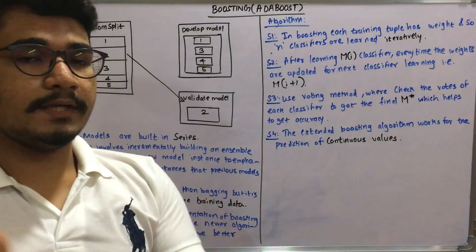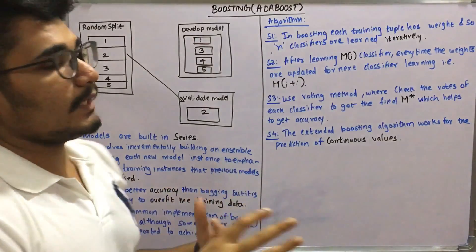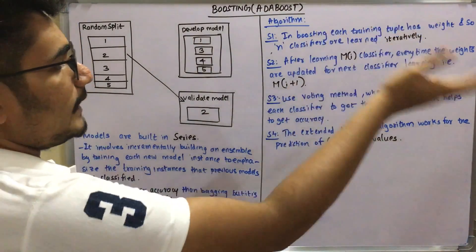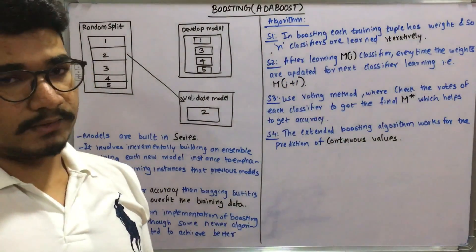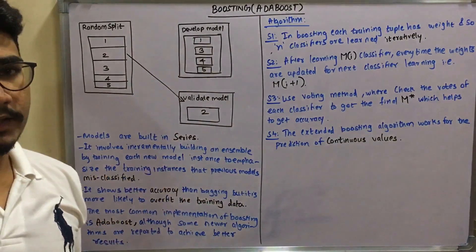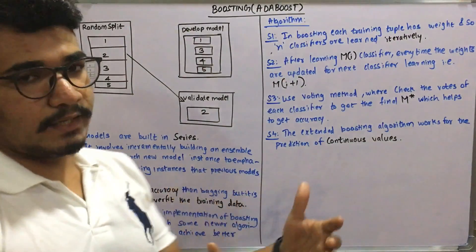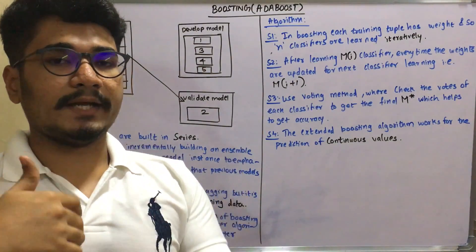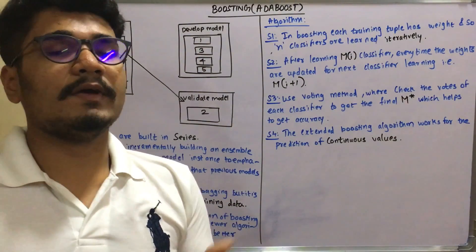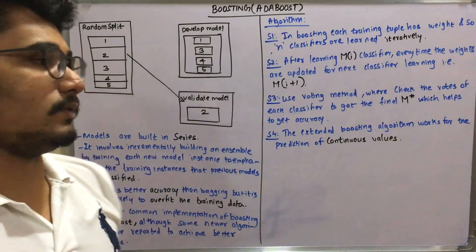Next, after learning Mi classifier, every time the weights are updated for the next classifier, so it's called an incremental approach. You boost it like Mi is there, then next one is Mi+1, then Mi+2, third value Mi+3, and so on. After every iteration it is updated with a value of one.